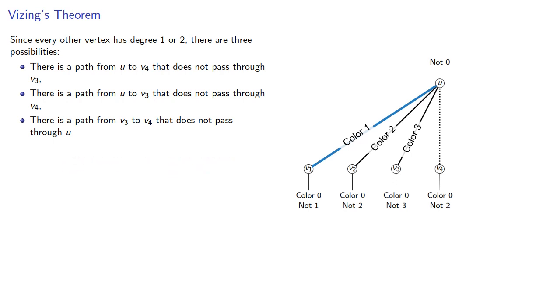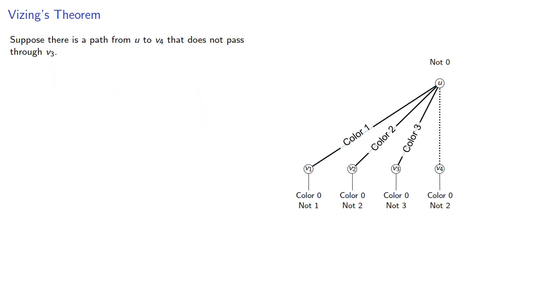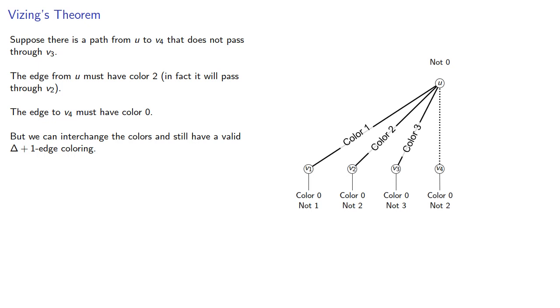And at this point, you have seen enough graph theory proofs that you can probably predict what we are going to do next. Suppose there is a path from u to v4 that does not pass through v3. The edge from u must have color 2, in fact it is going to pass through v2. The edge to v4 must have color 0, but we can interchange the colors and still have a valid delta plus 1 edge coloring.